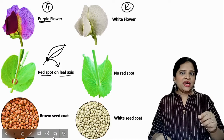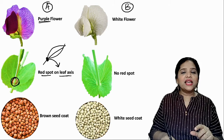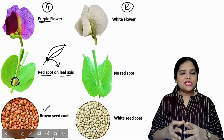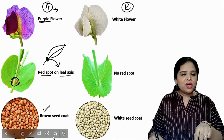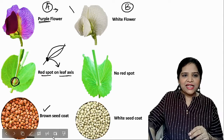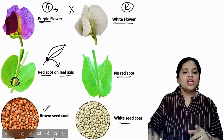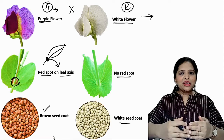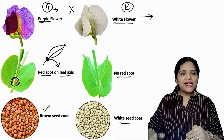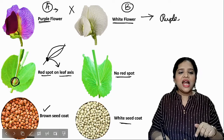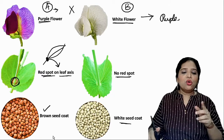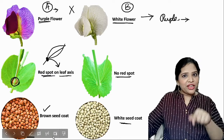Mendel found that plant A had red color spots on the leaf axils and the seed coat was brown in color. So plant A had purple flowers, red spots on the leaf axil, and brown seed coat. He crossed this with another plant which had white flowers, no red spot on the leaf axil, and a white seed coat. Mendel found that all three characters were simultaneously inherited from the parent to the offspring.